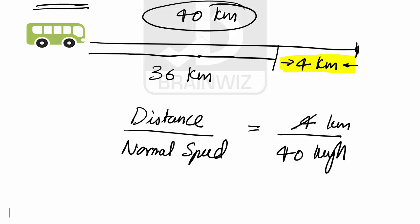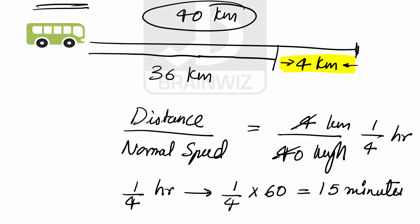Now, we found that it is 1 by 4 hour. 1 by 4 hour is the time it has taken because of stoppages. We can convert this 1 by 4 hour into minutes by multiplying by 60, which means 15 minutes. It means the bus is going to stop 15 minutes for every 1 hour.